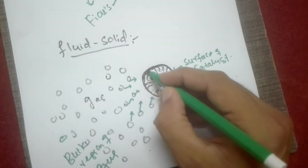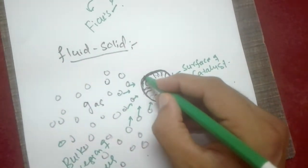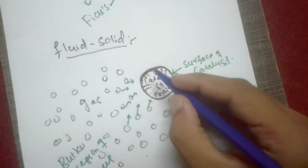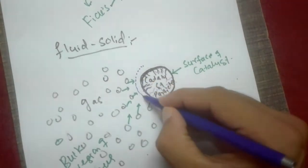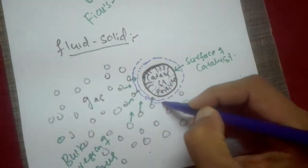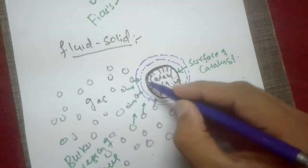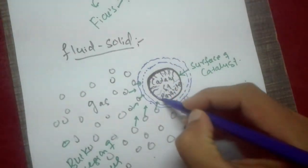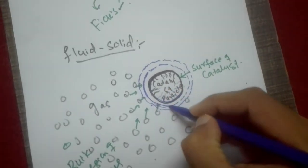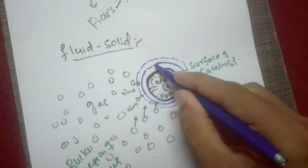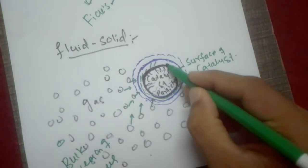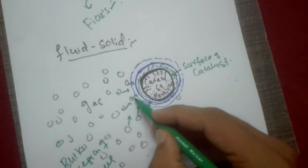As we know, there is a solid-fluid boundary — a solid-gas or solid-liquid boundary — and a hydrodynamic boundary layer surrounding the catalyst. This is the boundary layer; this is the external surface of the catalyst, and this shaded region is the external boundary layer.